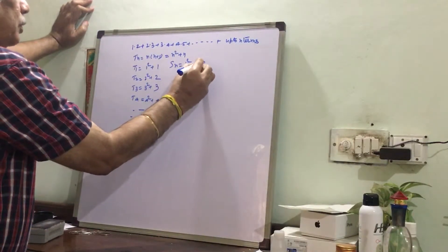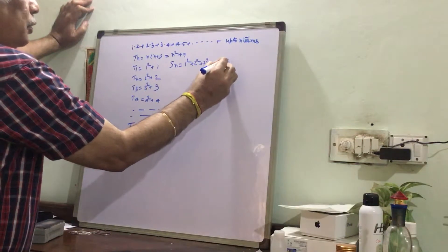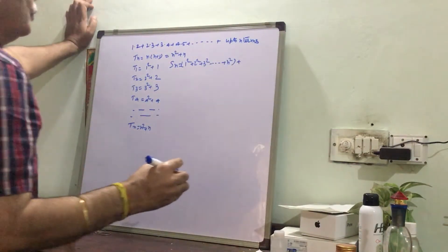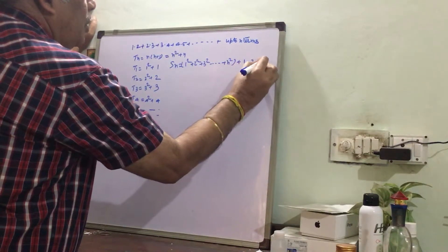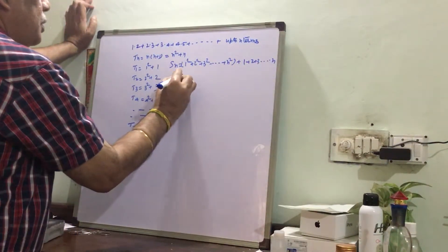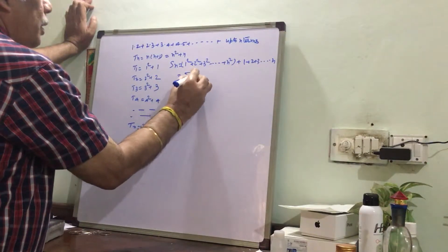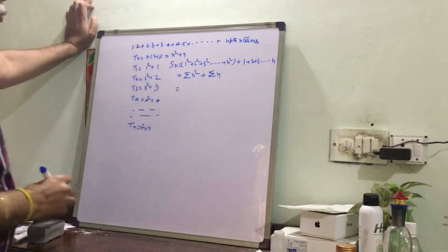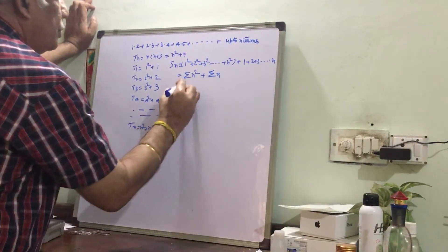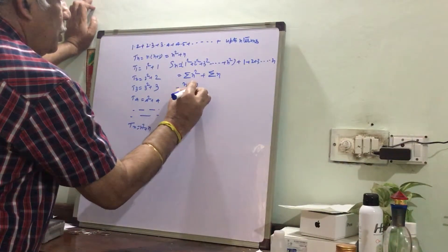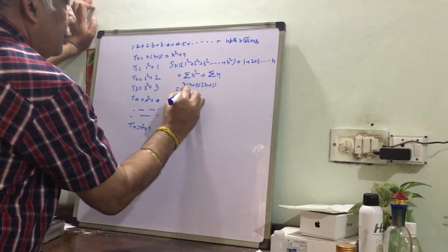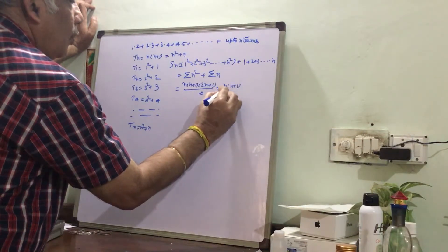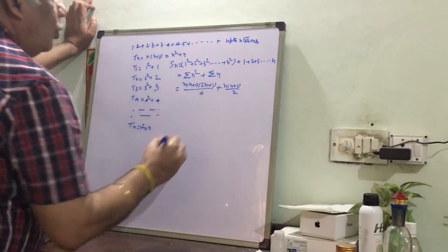Now see, we add all these terms so we get Sn equal to 1² plus 2² plus 3² plus n², and plus 1 plus 2 plus 3 up to n. So this is basically sigma n² and this is sigma n. So we can put these values, sigma n² is n(n+1)(2n+1) by 6 plus n(n+1) by 2.